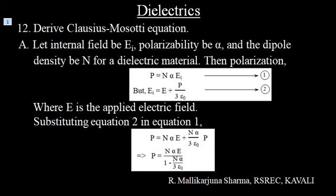But E_I is equal to E plus P divided by 3 epsilon-naught. (Equation 2) Where E is the applied electric field.